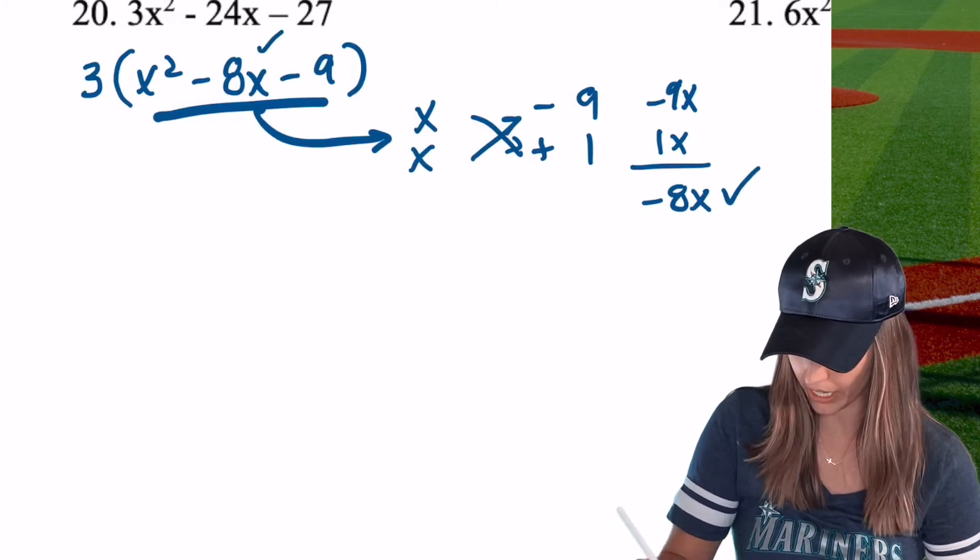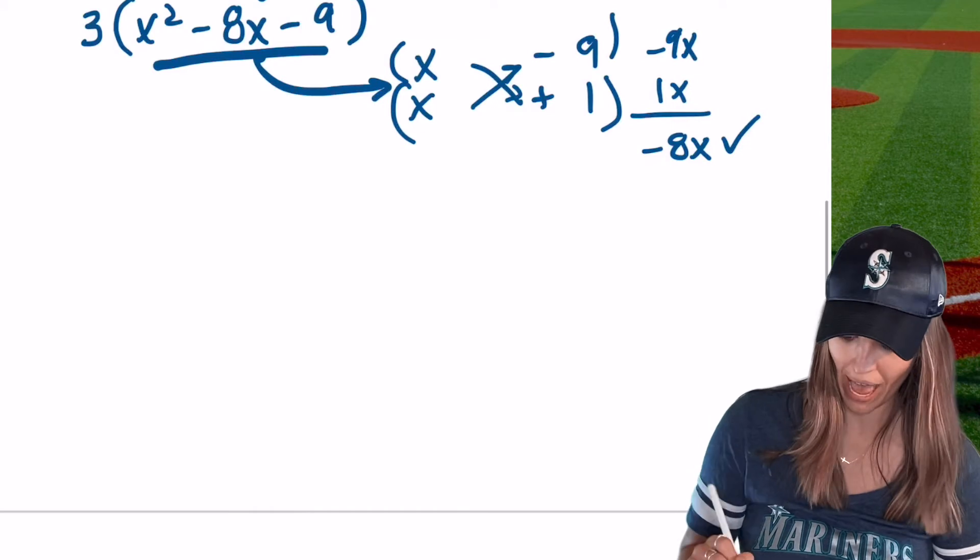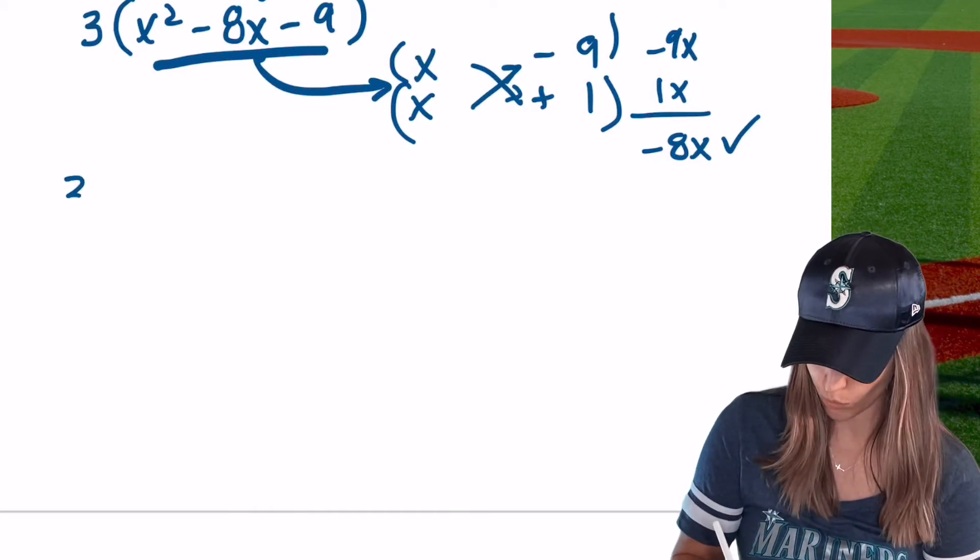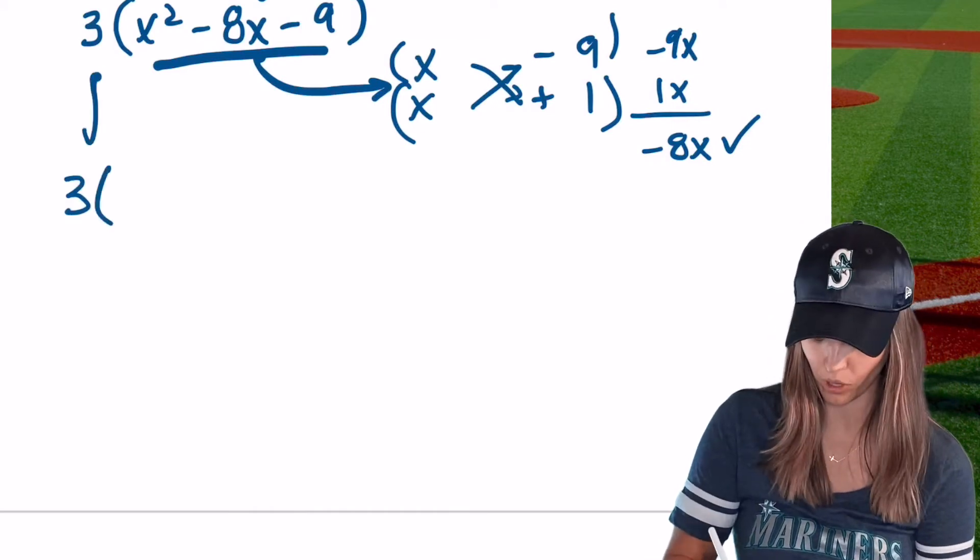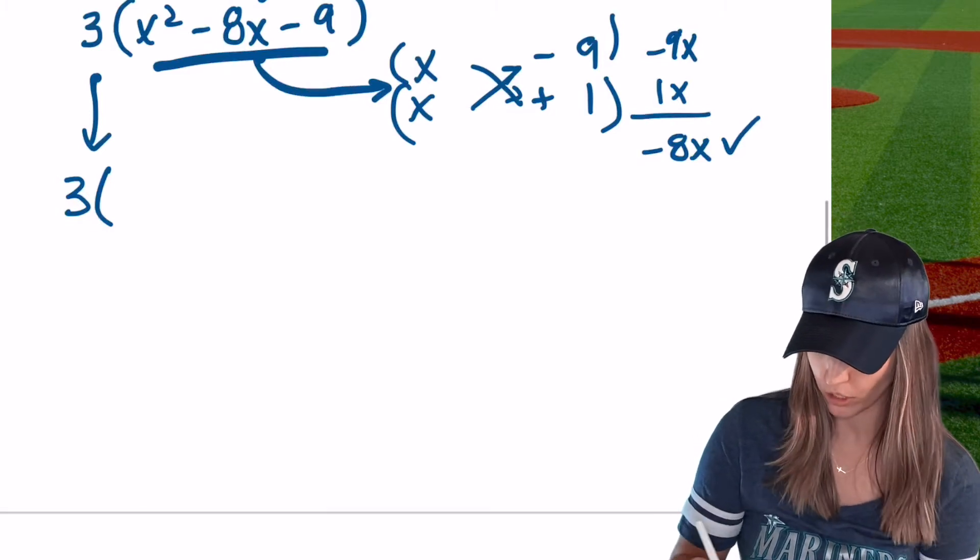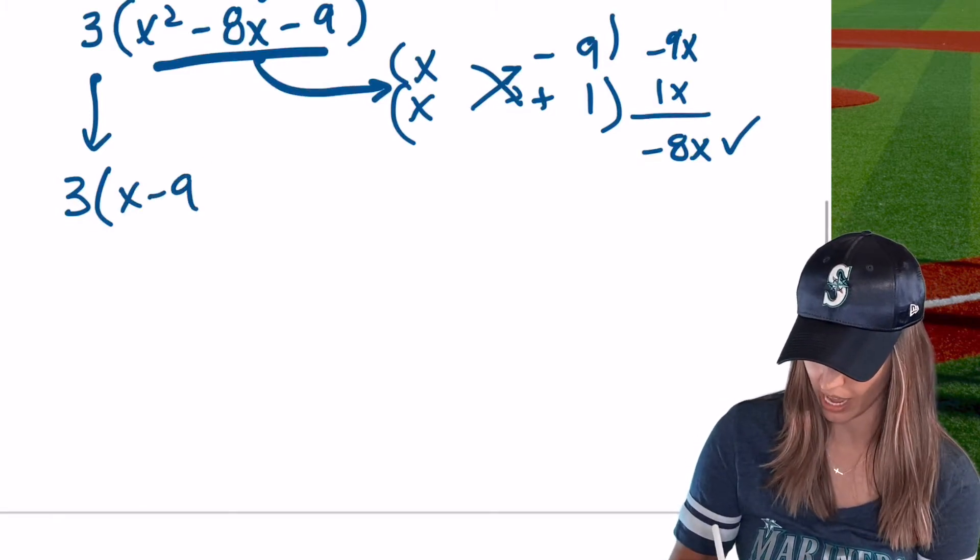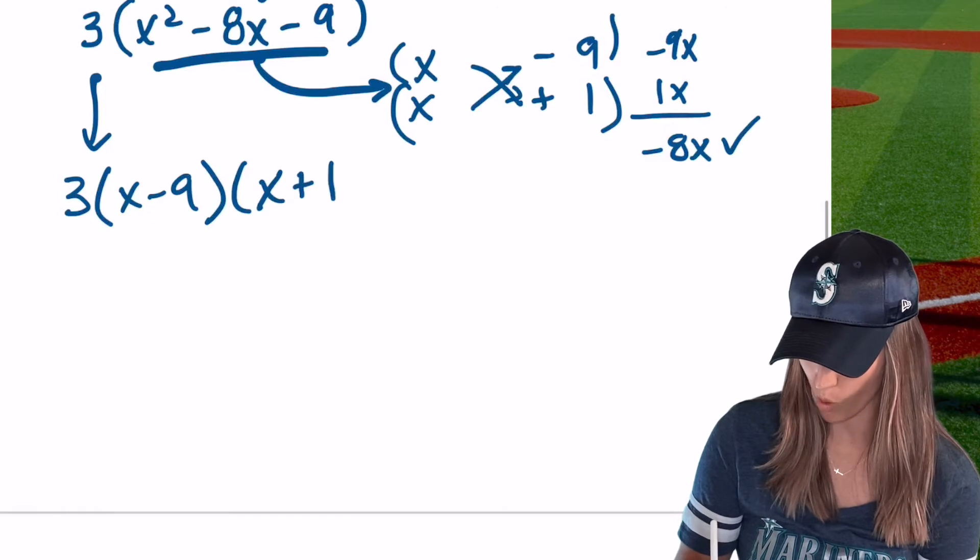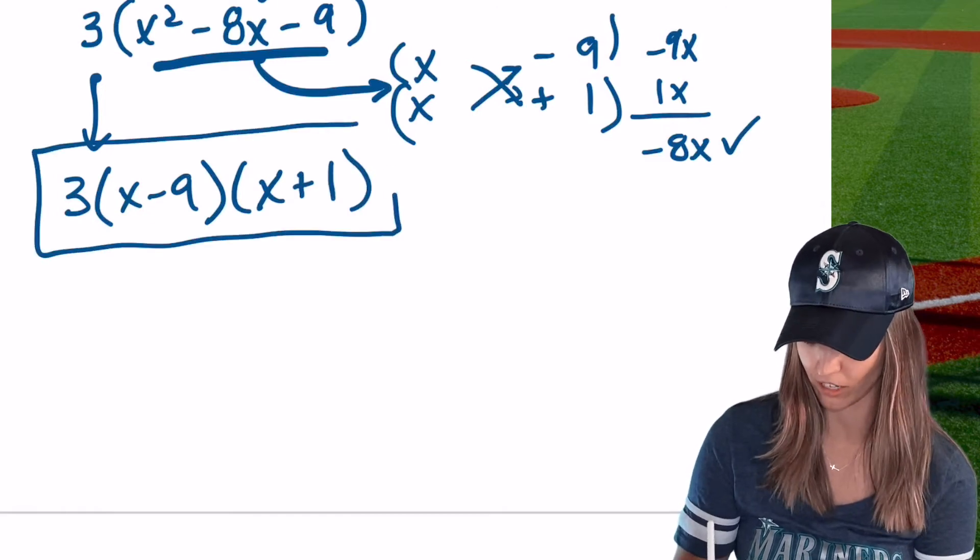So multiplies to 9. 3 and 3, but that's not going to add to negative 8. So let's do 9 and 1, highest product negative. That way when they add together, I still get a negative. Add those together, I'm going to get negative 8x. Boom, that's what I wanted. So here's my two factors. So now I can head back to my original, writing down that 3, because I did pull out that GCF. It is not okay to drop that 3, so make sure you still write it in front. But my two factors are going to be x minus 9, and then x plus 1. All together, there's my factored form.